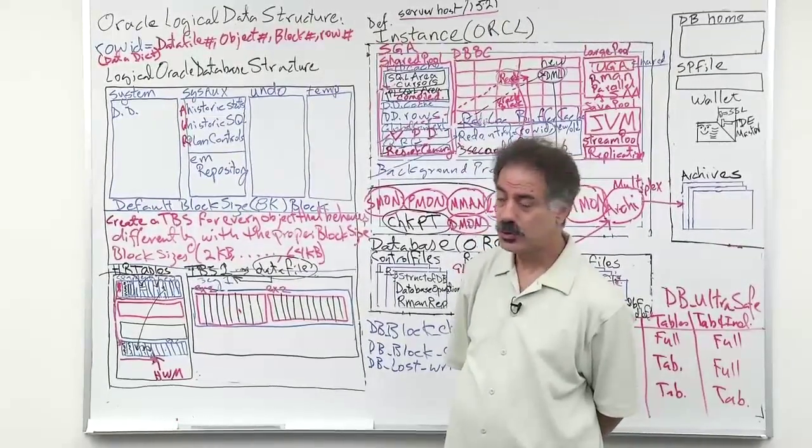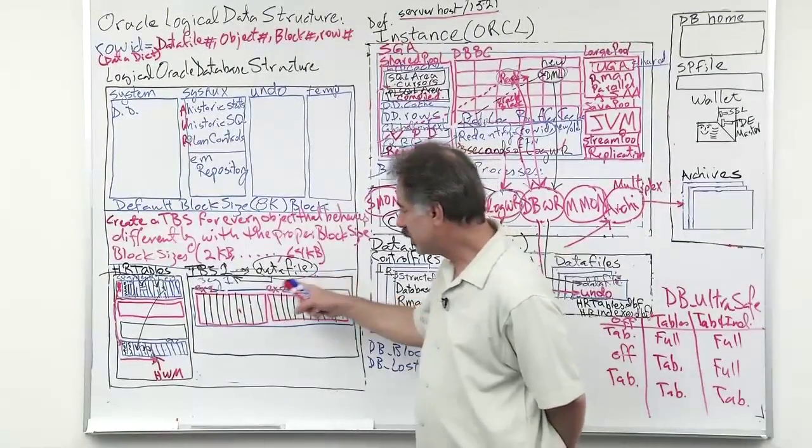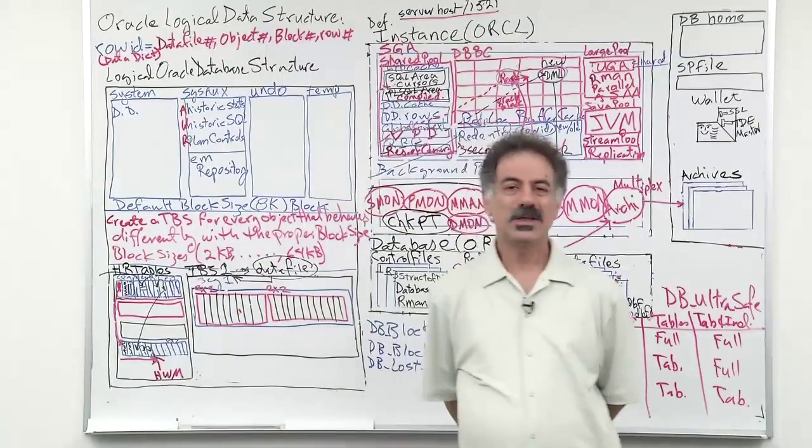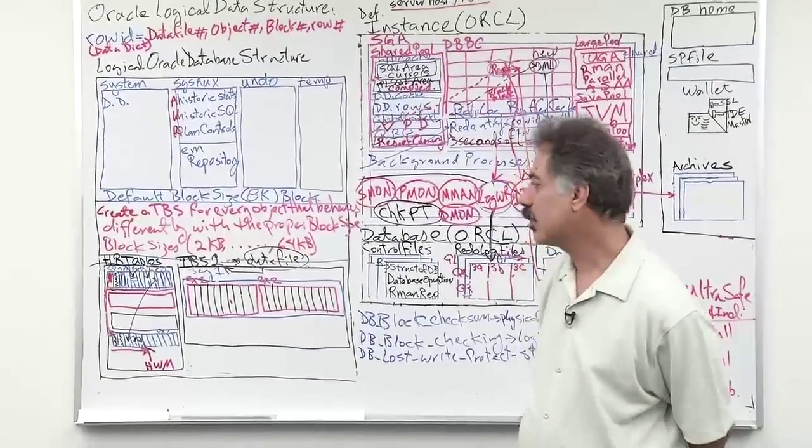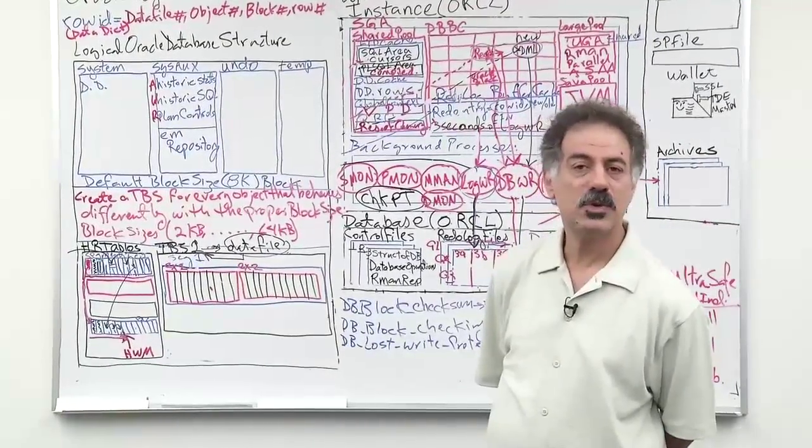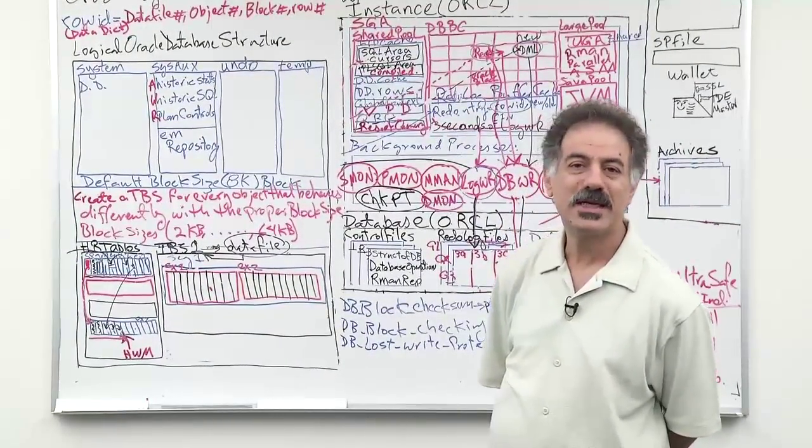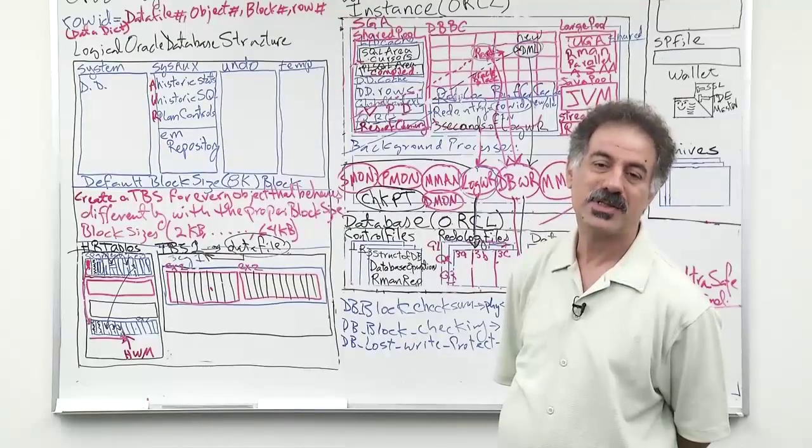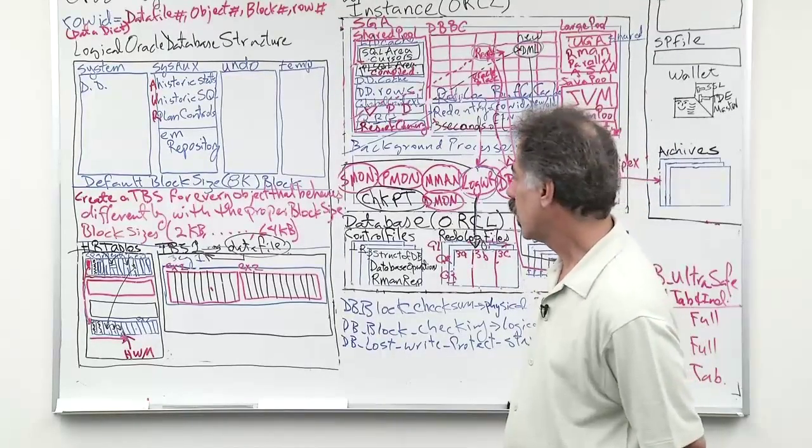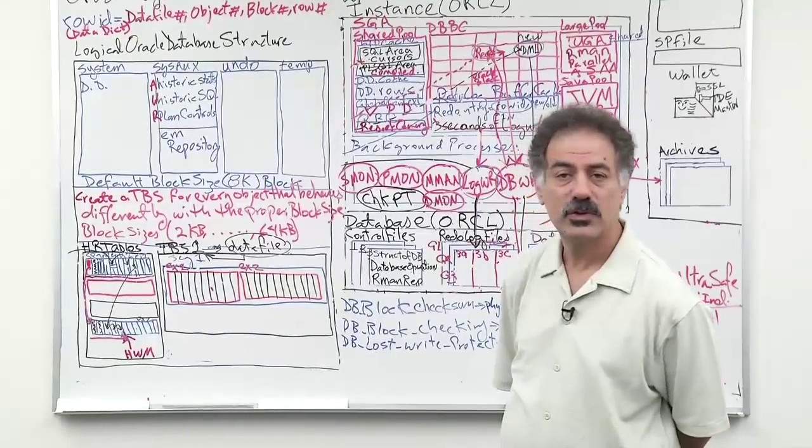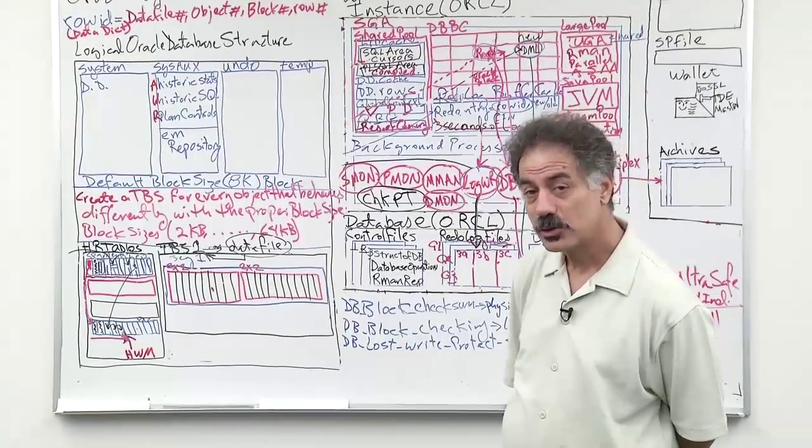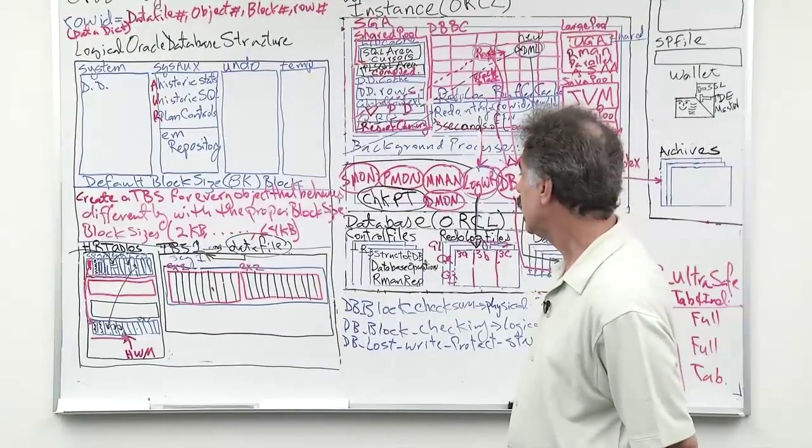The default block size as we said cannot be changed, and then we create additional table spaces based on what we need in the database. We create table spaces based on object type, size and behavior. That's why we need to make sure that the table spaces we create have the proper block size to start with.